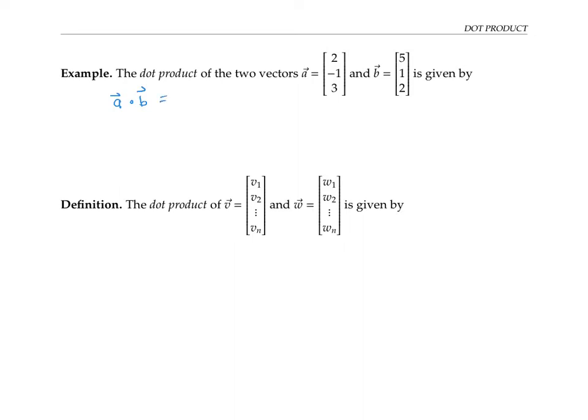To compute that, we multiply corresponding entries and add them up. So here we do two times five, plus negative one times one, plus three times two, and that adds up to 15.